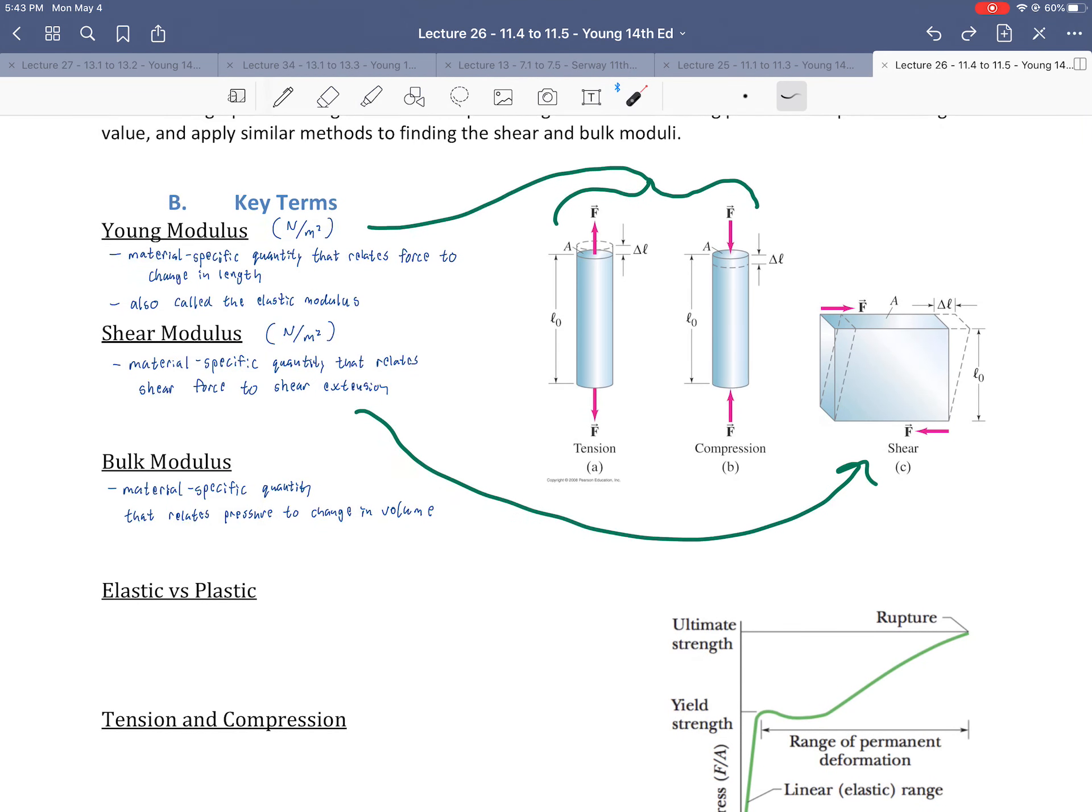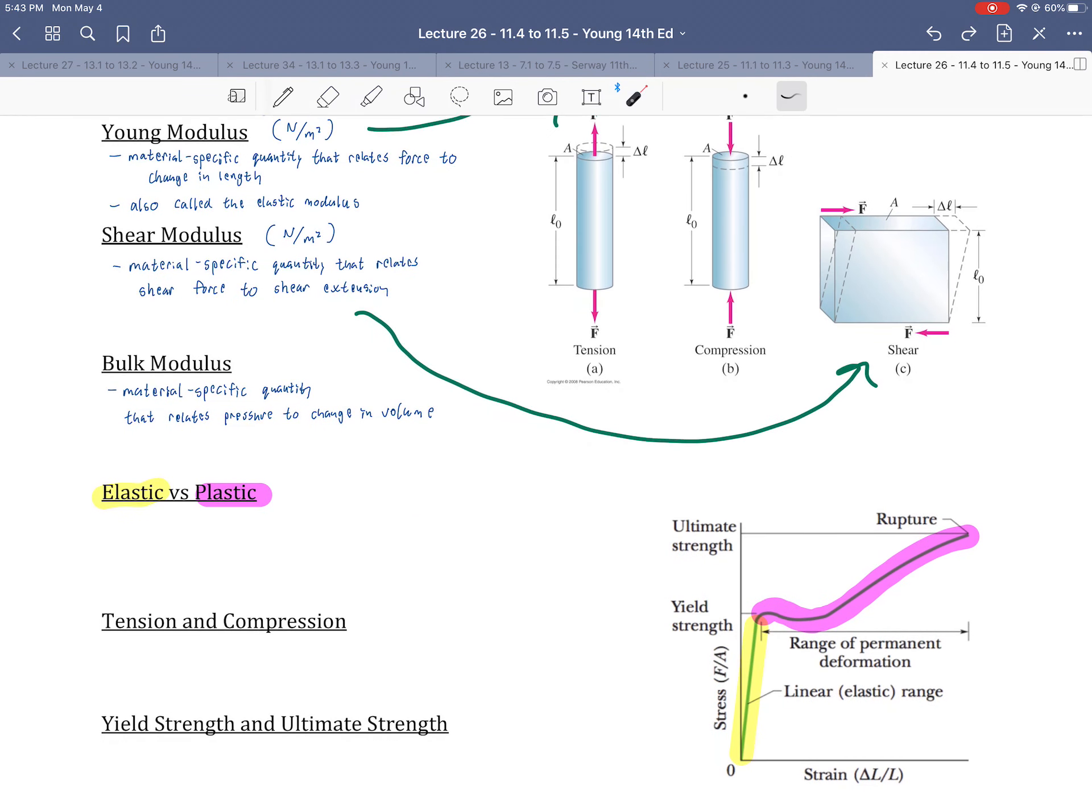Then we have the bulk modulus. This is another material-specific quantity that relates pressure to change in volume. This is where the whole thing is getting compressed. The units of the bulk modulus are also Newtons per square meter.